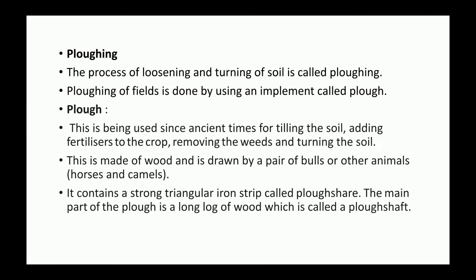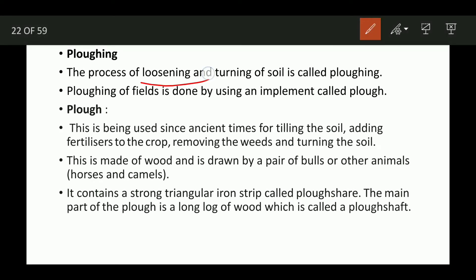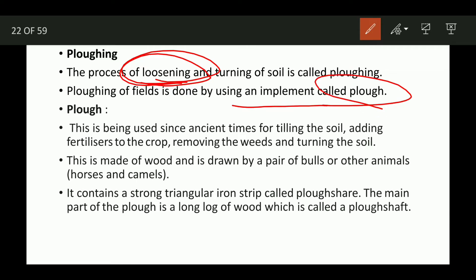The first step is plowing. The process of loosening and turning of the soil is called plowing. Plowing of a field is done by using an implement called a plow; other implements like hoe and cultivators are also used. This has been used since ancient times for tilling the soil, adding fertilizer to the crop, removing weeds and turning the soil.